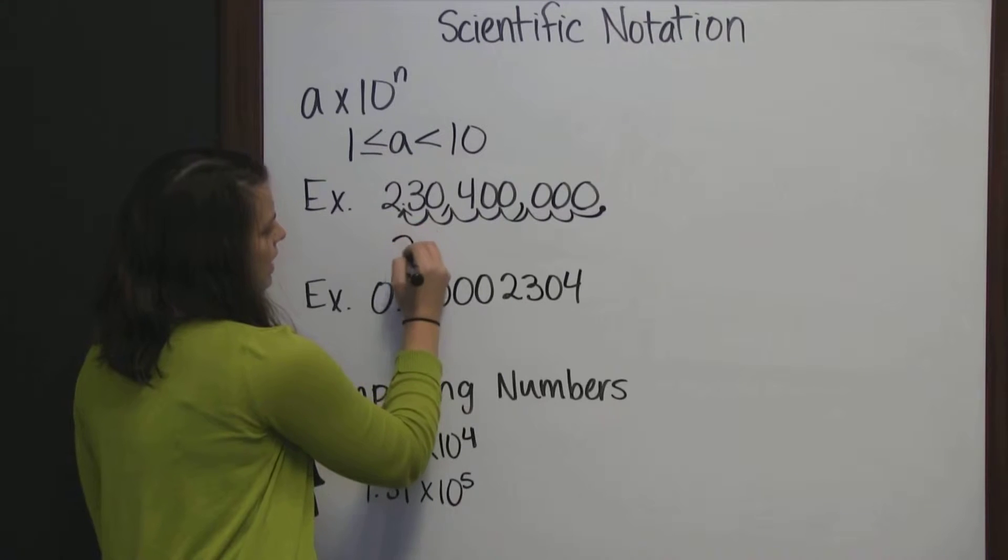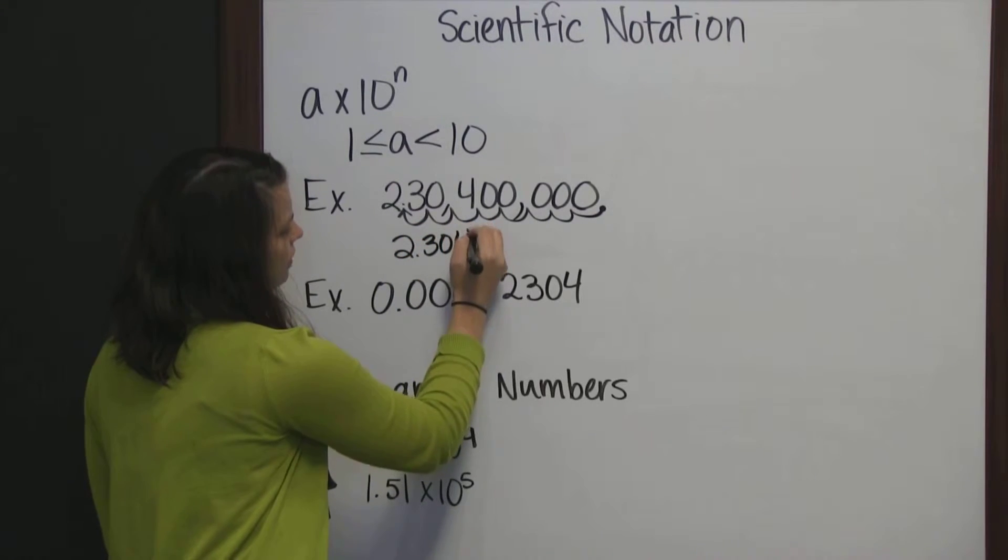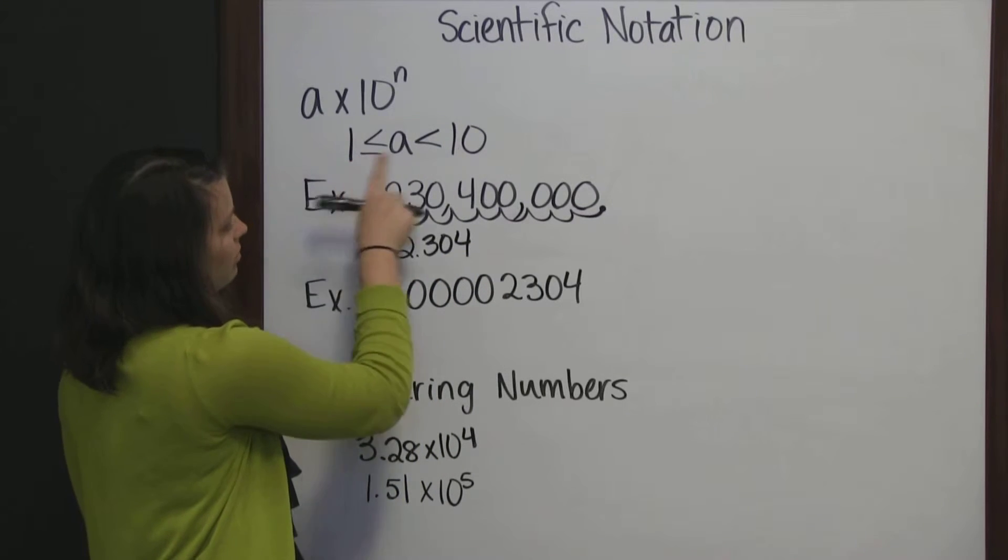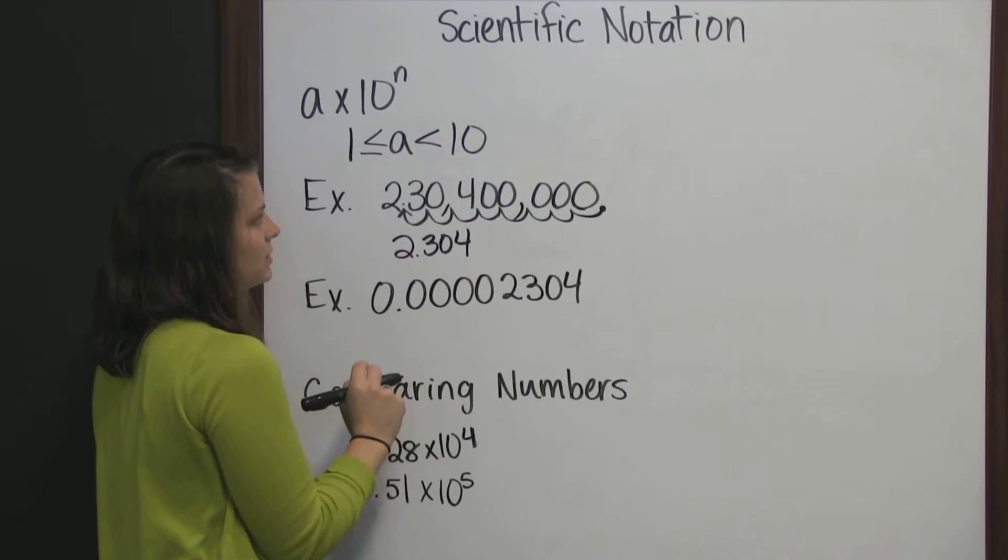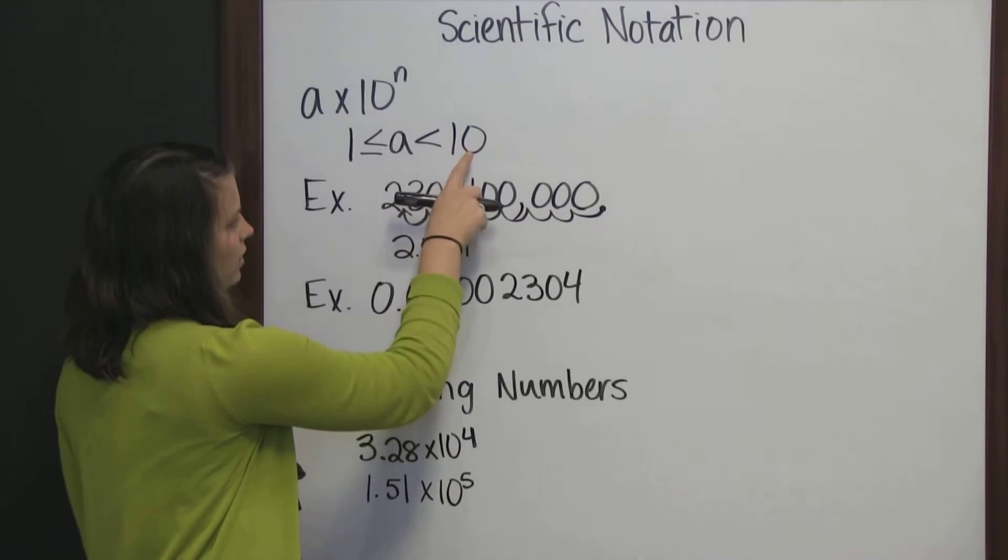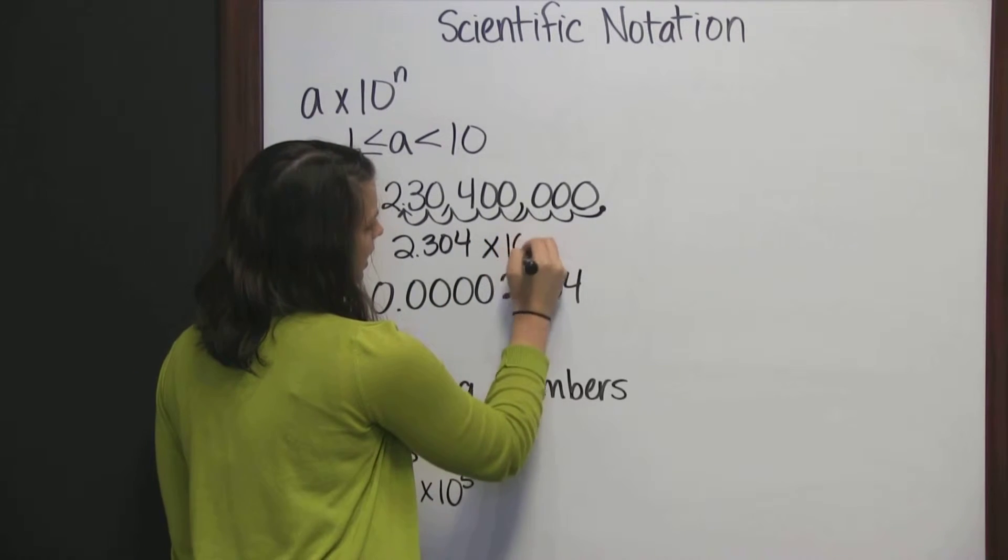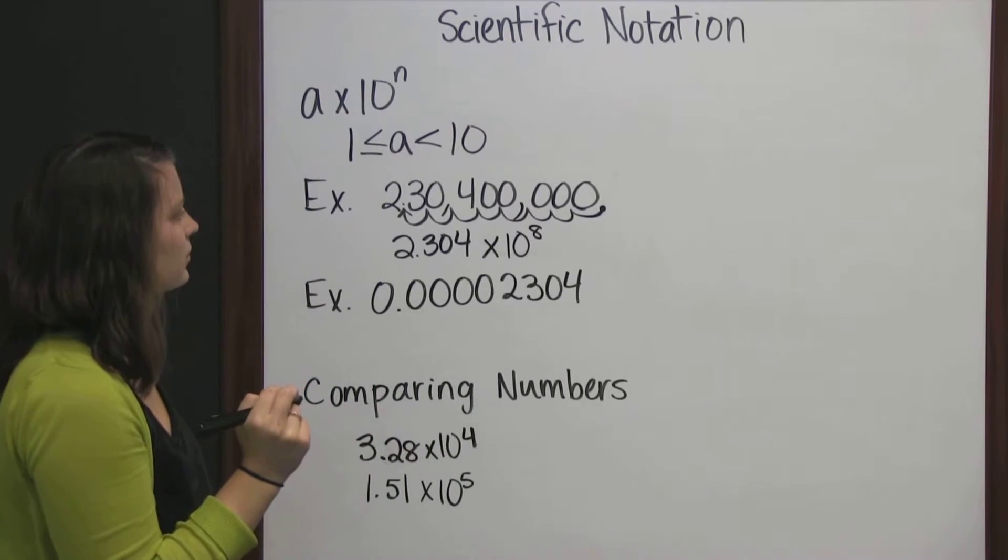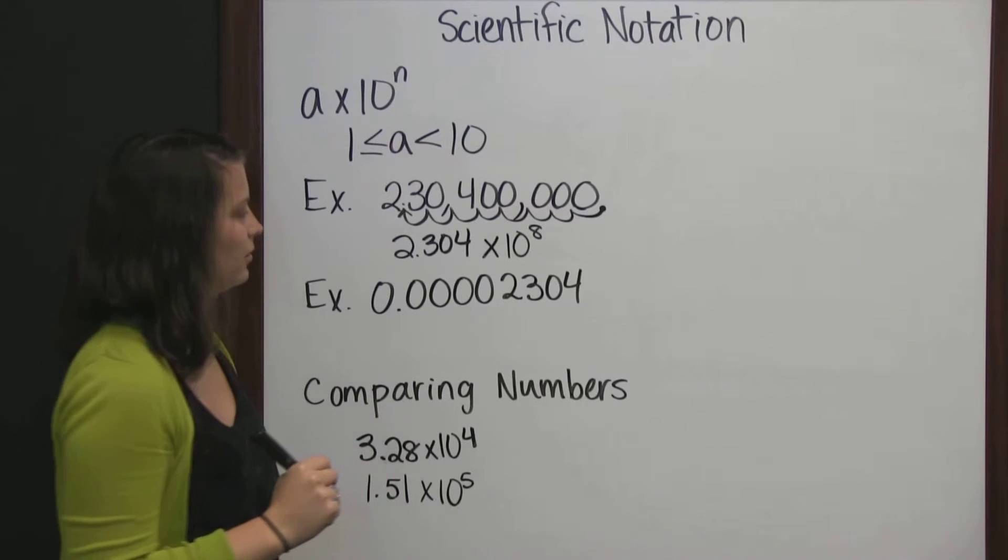So that our number is now 2.304. And you see my a is a number between 1 and 10. 2.304 is greater than or equal to 1, but less than 10. Times 10 to the 8th. And this number is the same as my original number.